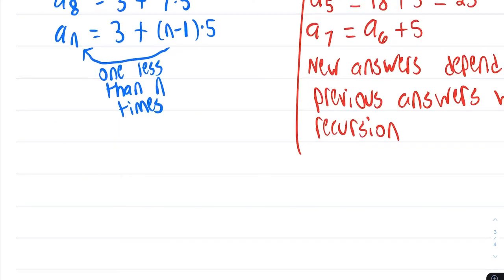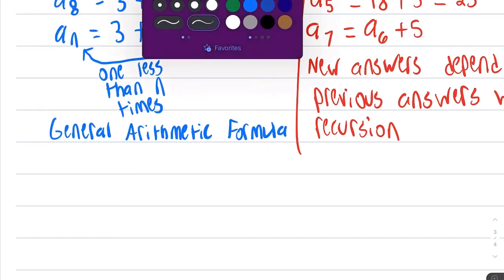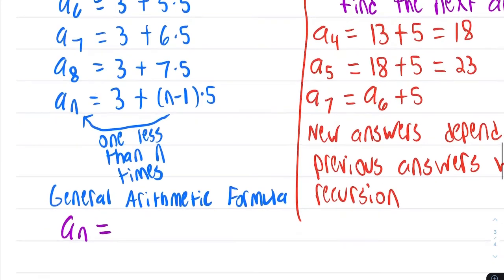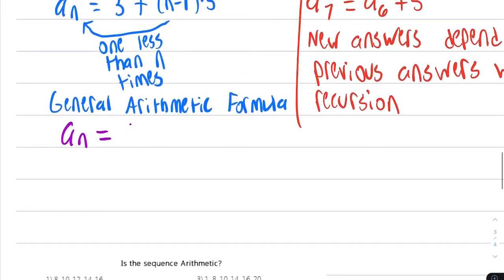And let's put this into one general formula. This formula is what we use for every arithmetic sequence. That formula would be an equals the first number. That number 3 that we have in common up here, that's there because that was the first term.